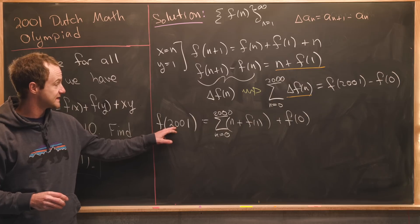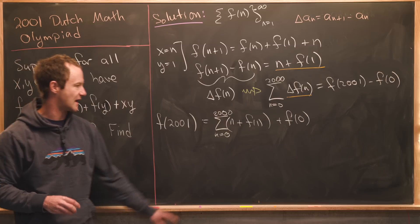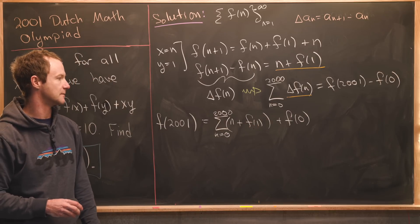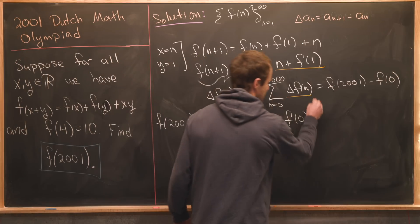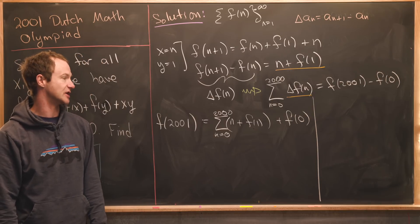This is a nice way to calculate f of 2,000 but we have two things that we need to find. One of those is f of 1 and one of those is f of 0. So let's go ahead and calculate those and then we'll see how to finish it up.